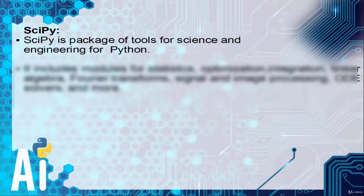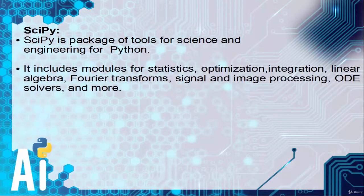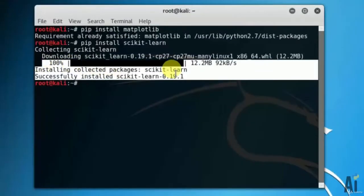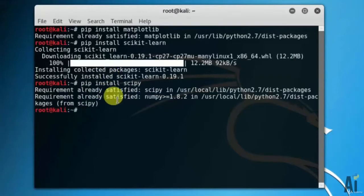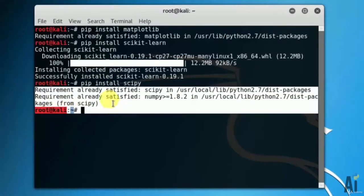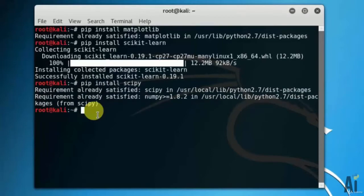Now next, scipy. Scipy is a package of tools for science and engineering for Python. It includes modules for statistics, optimization, integration, linear algebra, Fourier transforms, signal and image processing, ODE solvers, and more. Use the command pip install scipy. As you can see, I have already installed it, that's why it's showing requirement already satisfied.